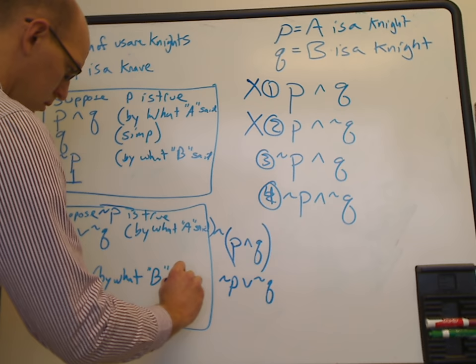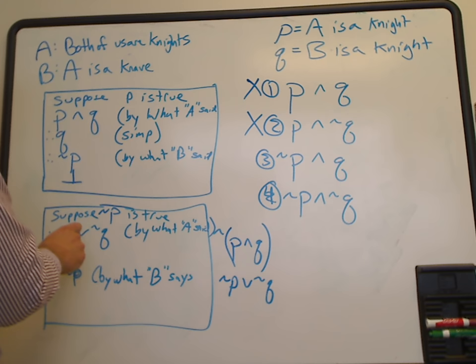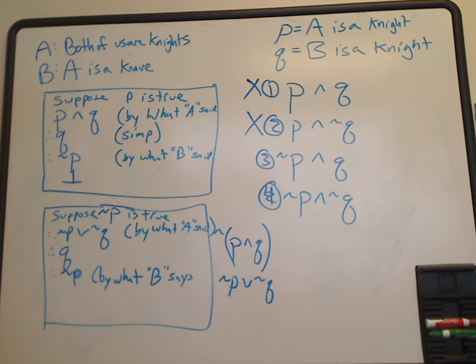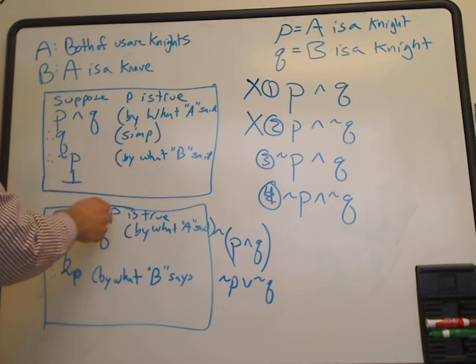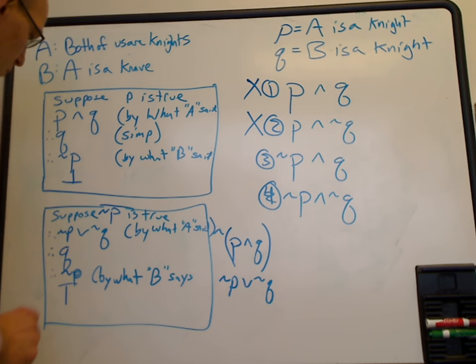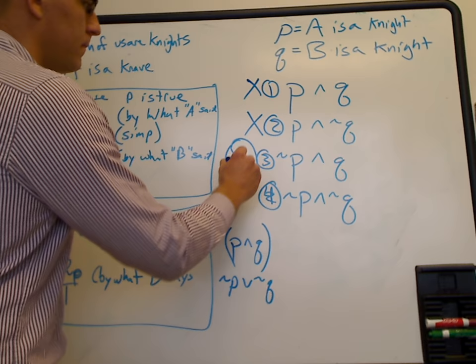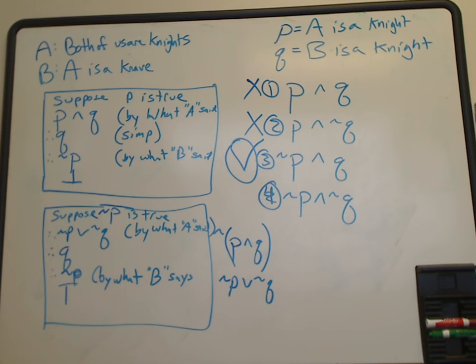We've shown that not-P is true and Q is true, and we haven't reached a contradiction — all of these are consistent. When we don't reach a contradiction, we must have found the right answer. The right answer is indeed possibility three: A is a Knave and B is a Knight. We have justification: if A is a Knave, then what they said is a lie, so we write out the negation of what they said and take that as truth. Then we follow through by what B says and show that that's also true.